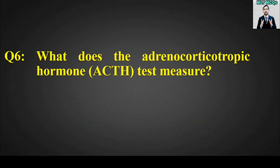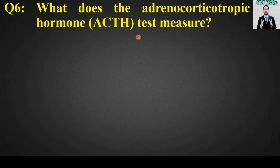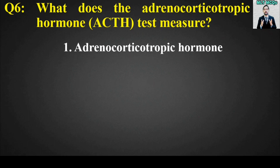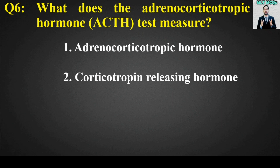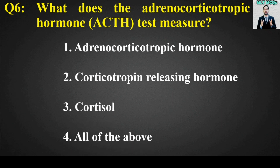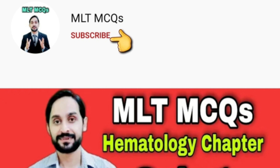MCQ number 6: What does the adrenocorticotropic hormone ACTH test measure? Options are: adrenocorticotropic hormone, corticotropin releasing hormone, cortisol, or all of the above. The right answer is option number 1, adrenocorticotropic hormone. Dear students, subscribe to our channel MLT MCQs, where MCQs are given every other day from all MLT subjects, helpful for college, university, or foreign job exams.